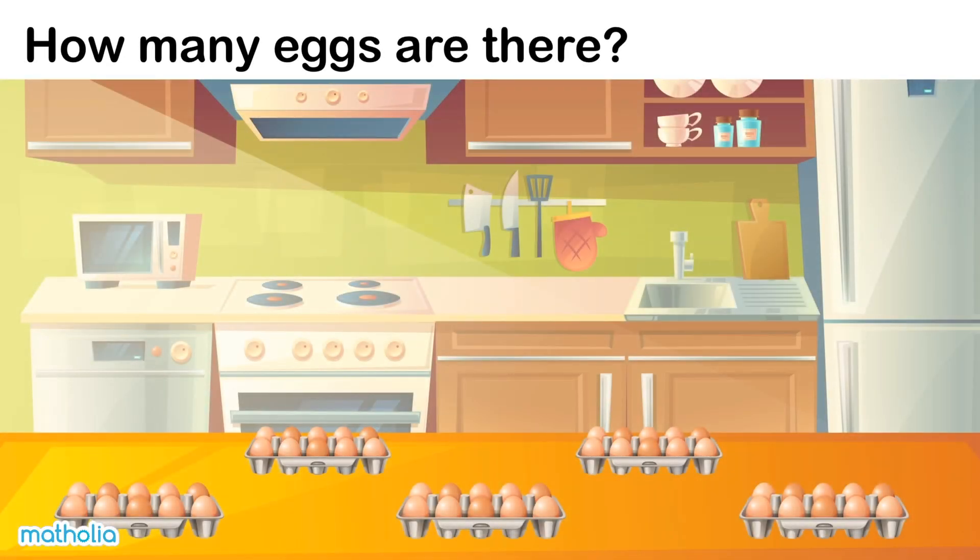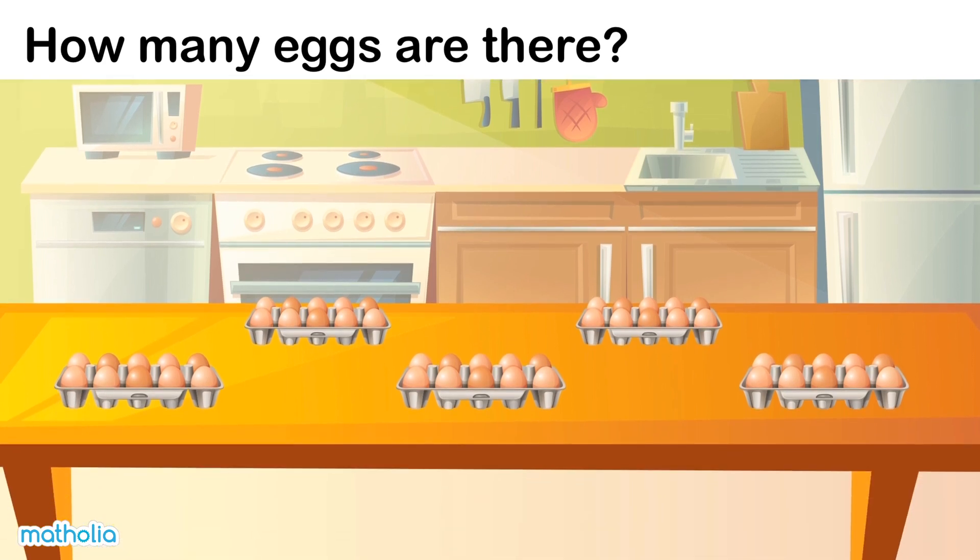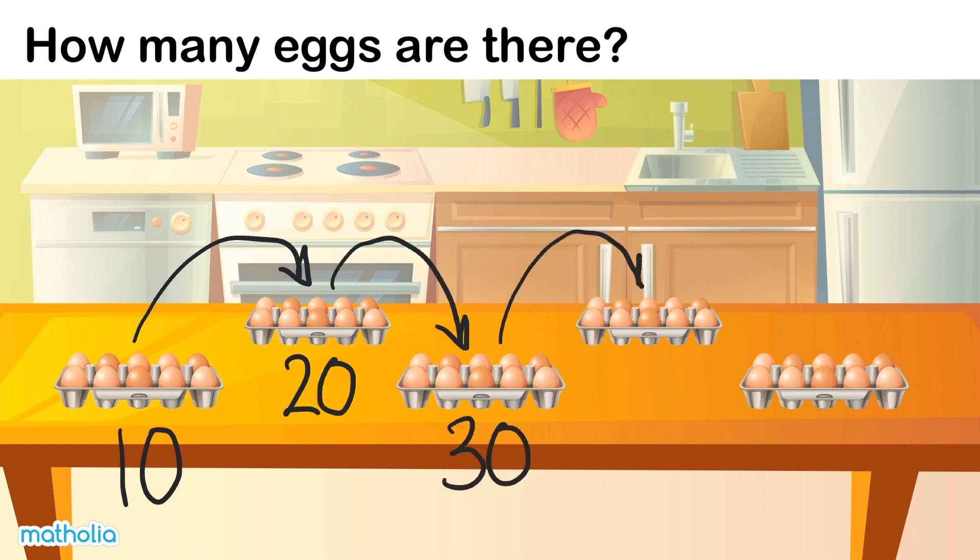How many eggs are there? Look at the cartons of eggs on the table. In each carton there are 10 eggs. We can find the total number of eggs by counting in tens: ten, twenty, thirty, forty, fifty. There are 50 eggs in all.